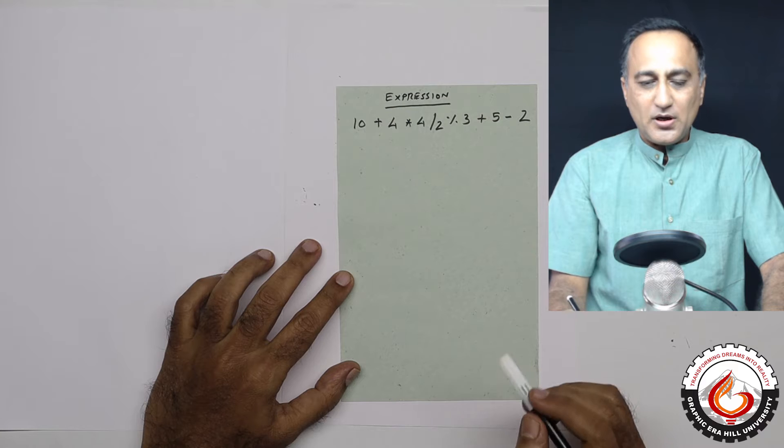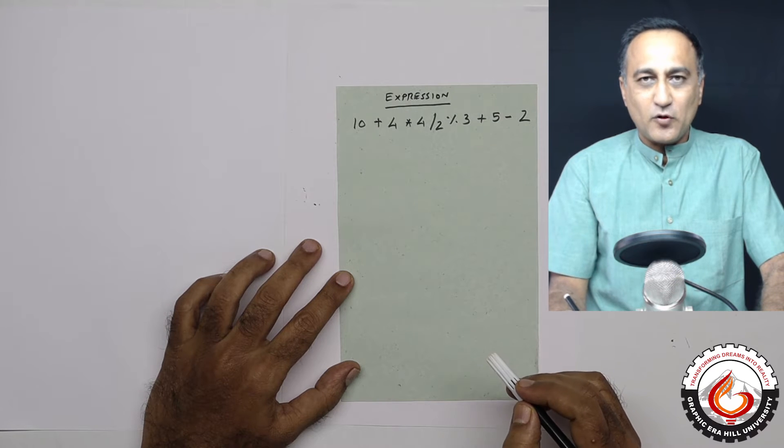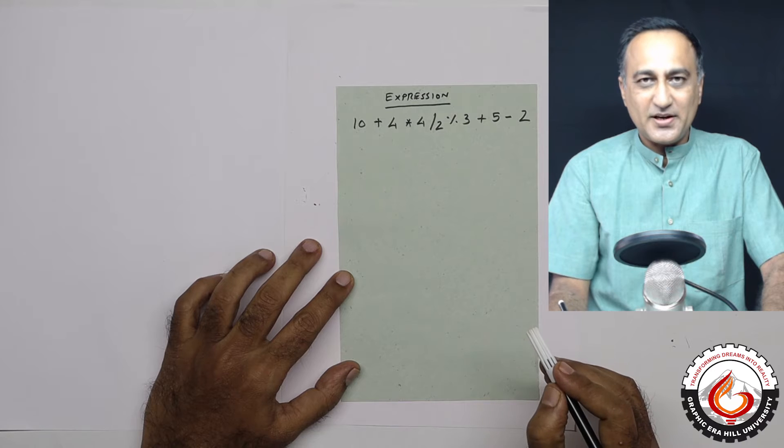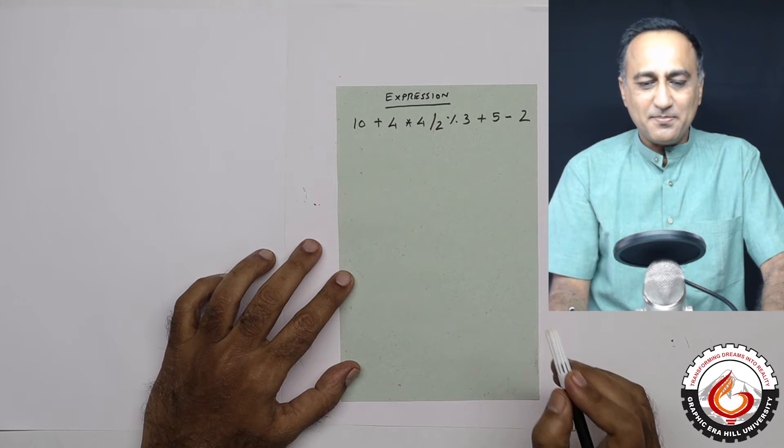We shall now take a look at how this arithmetic expression is evaluated following the rules of precedence and associativity in case there are more than one operator having the same precedence.